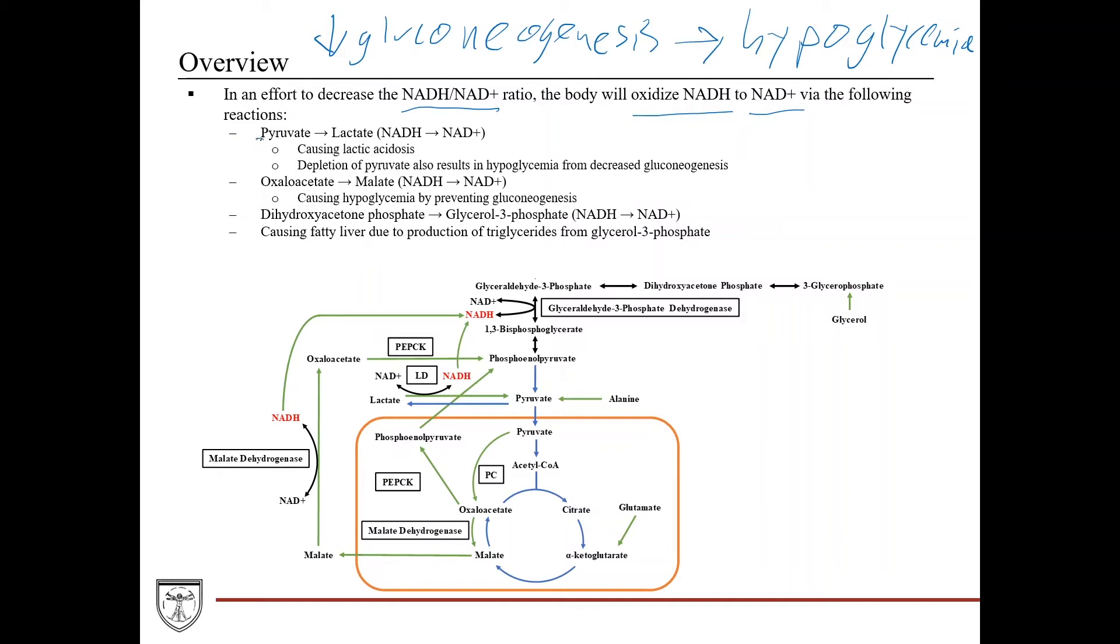So the reactions that are affected here is first pyruvate. So we'll come down here and we'll start with pyruvate, which is the end product of glycolysis. Now this figure, you may recognize it. It's a modified version of the figure we showed you in the gluconeogenesis lecture.